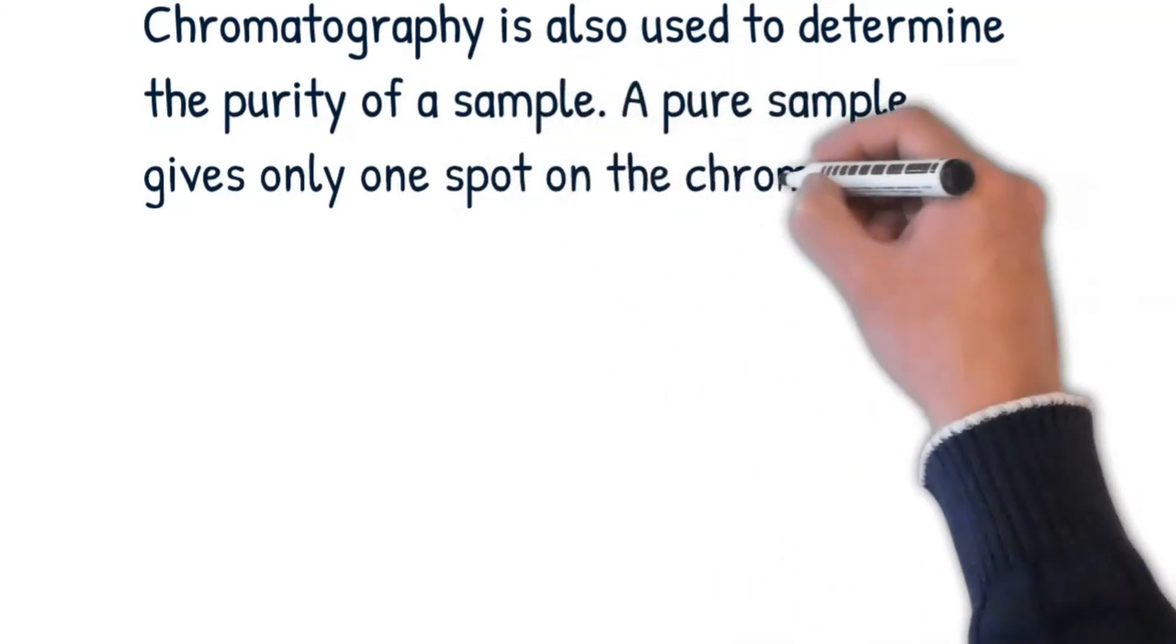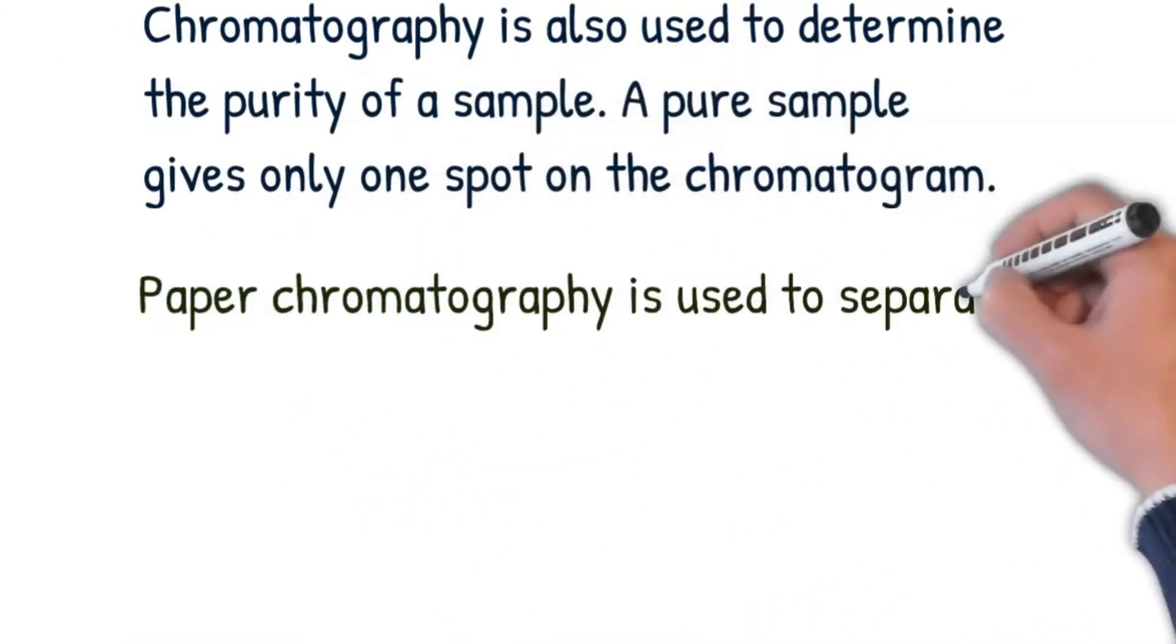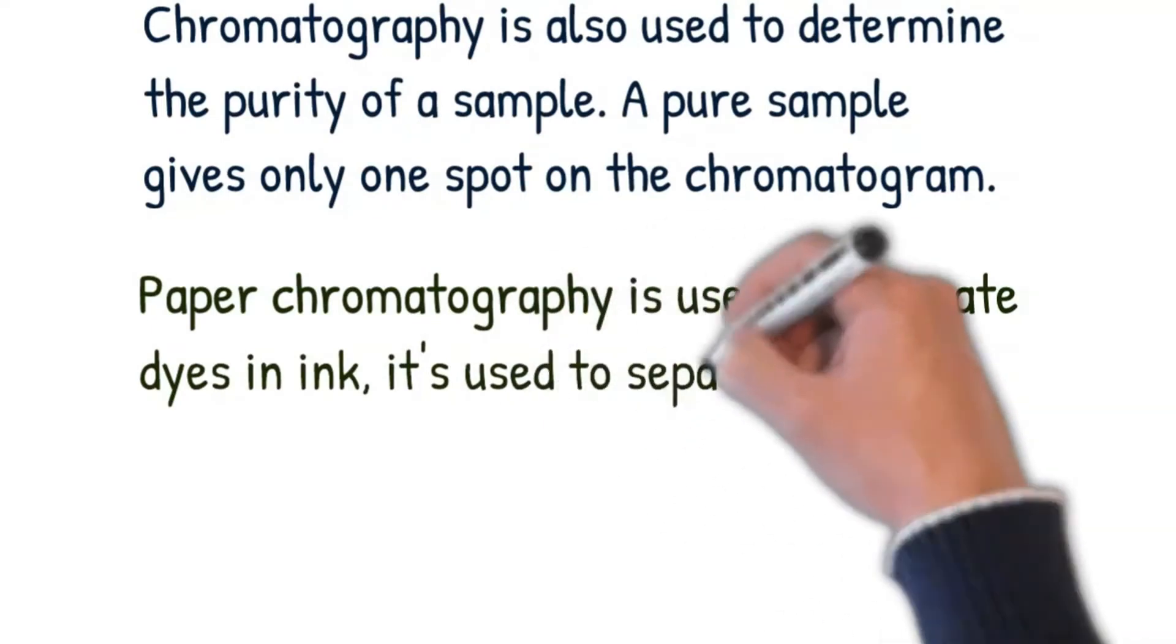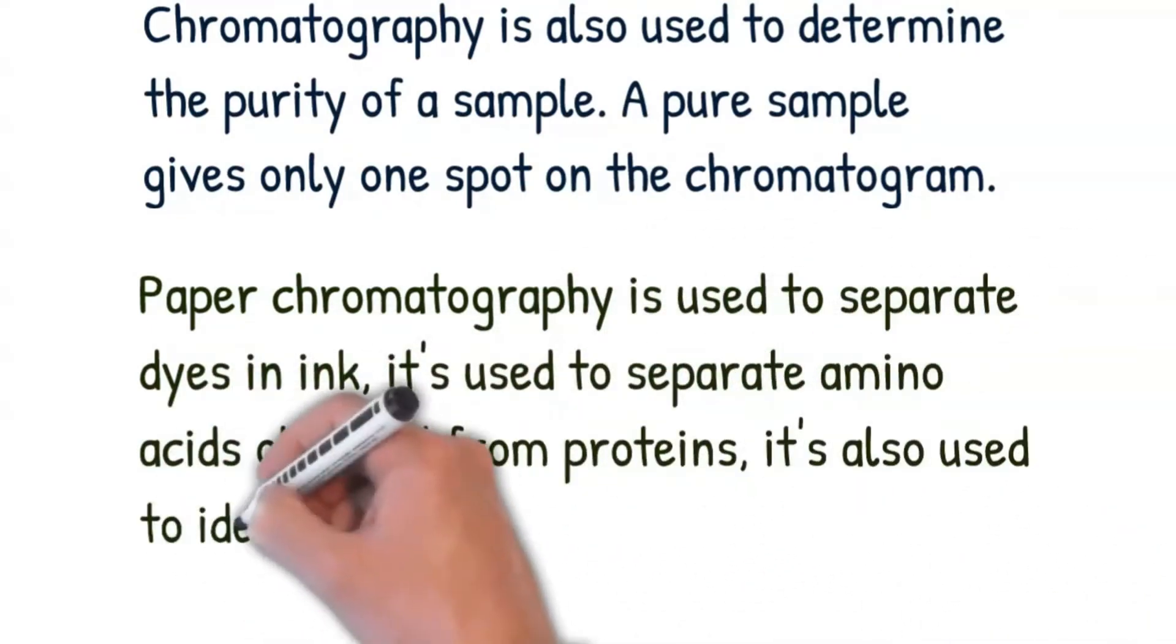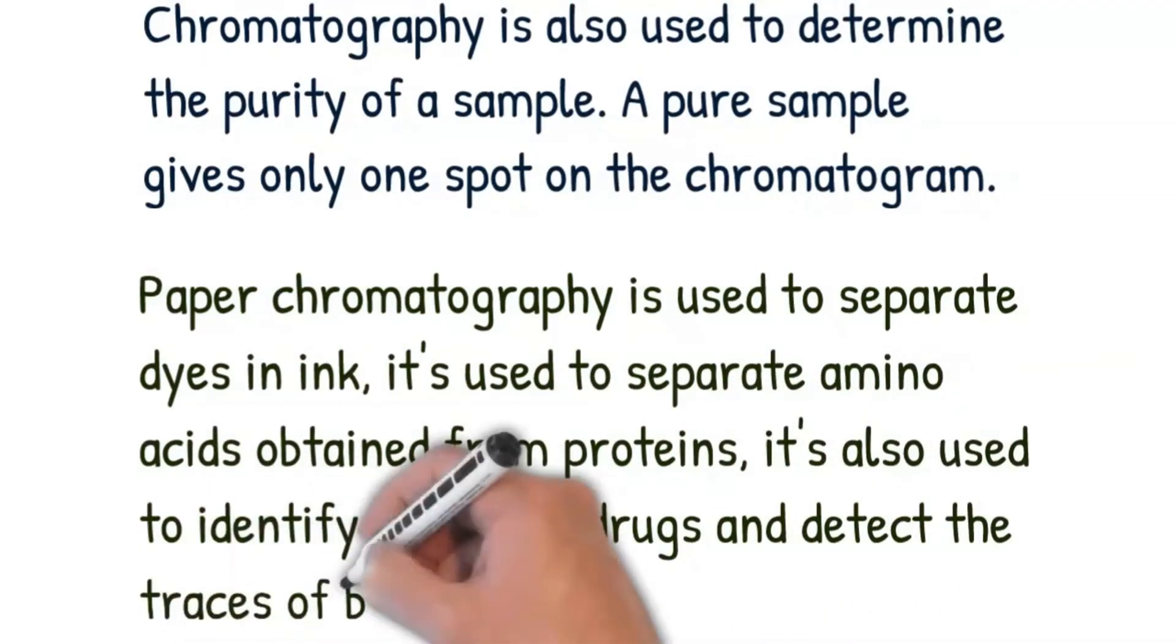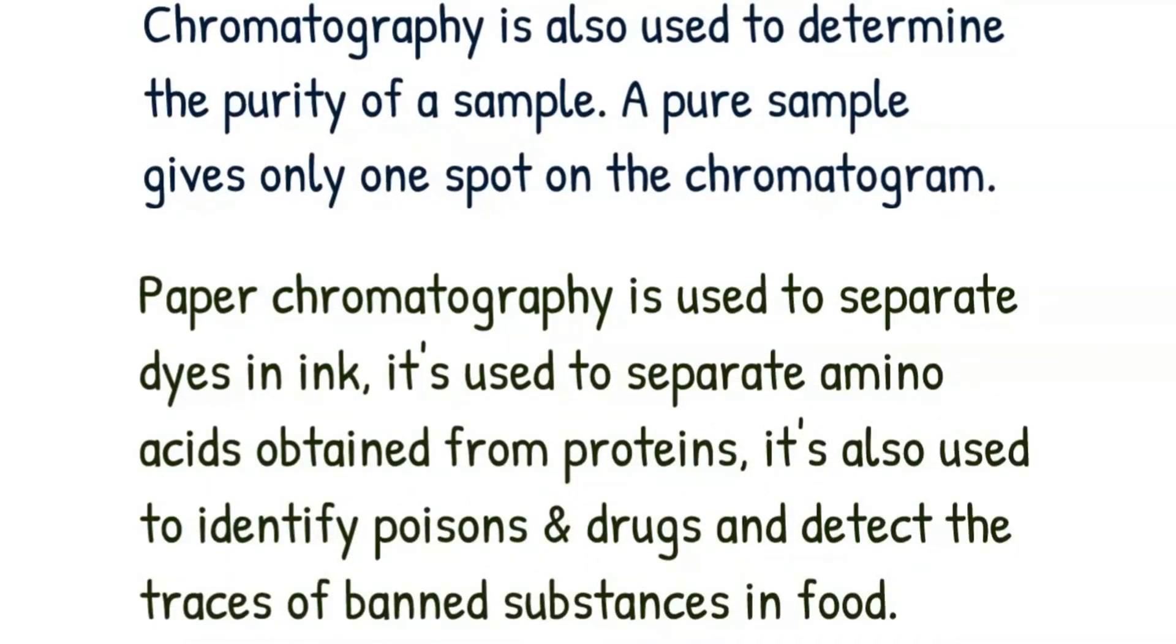Paper chromatography is used to separate dyes in ink, separate amino acids obtained from proteins, identify poisons and drugs, and detect traces of banned substances in food.